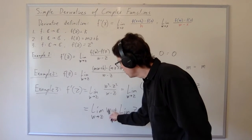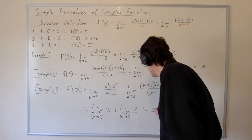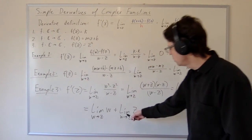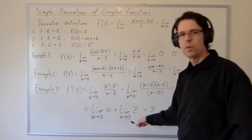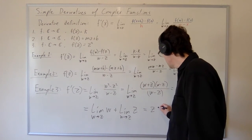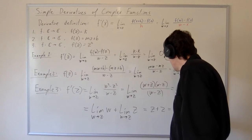And now as w approaches z, w approaches z, so we get z. And as w approaches z, this is a constant from the point of view of the approach of w towards z, and so we get z plus z, which is 2z.